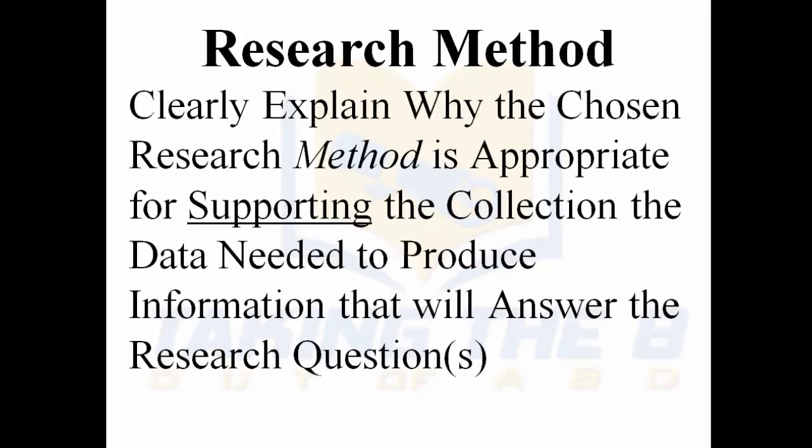In your research method, in the first couple of paragraphs, you want to clearly explain why the chosen research method – whether quantitative, qualitative, or mixed methods – is appropriate for supporting the collection of the data needed to produce information that will answer the research questions. You need to clearly articulate this information. If you cannot, that's a sign you need to go back and do more work. This may take one paragraph or a full page and a half. What is often missing in early drafts of Chapter 3 is that rationale to support why the research method will produce the type of data to get valid information.